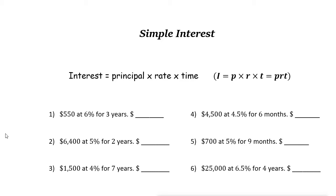To solve simple interest problems we use this formula: I equals the interest, the principal is the base, times the rate — the interest rate — and times the time. Time is usually one year.